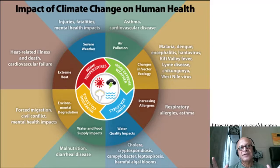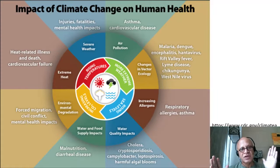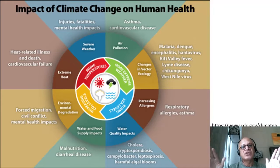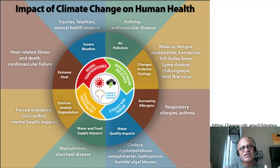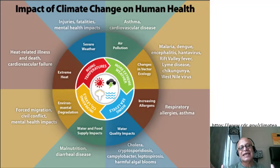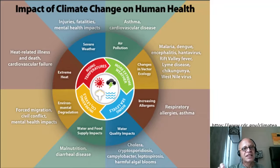Respiratory allergies and asthma are closely related to increasing allergens. Warming is expanding the growing season — spring arrives earlier in terms of temperatures and winter arrives later — so the phenology of many plants changes. Allergen production increases significantly, resulting in meaningful effects on respiratory allergies and asthma. This is another example of human ecology being affected by other species, whether vectors or plants.